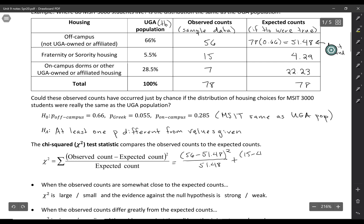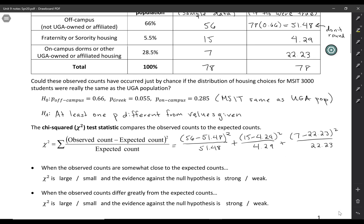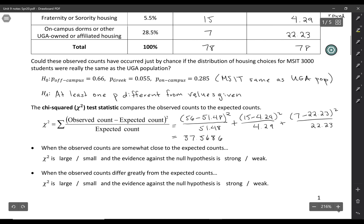15 minus 4.29 squared over 4.29. And then the last category, 7 minus 22.23 squared over 22.23. Okay, so again, before I tell you how to interpret this number, I want you to kind of think about what it means. So if we add all this up, we get a chi-squared statistic.